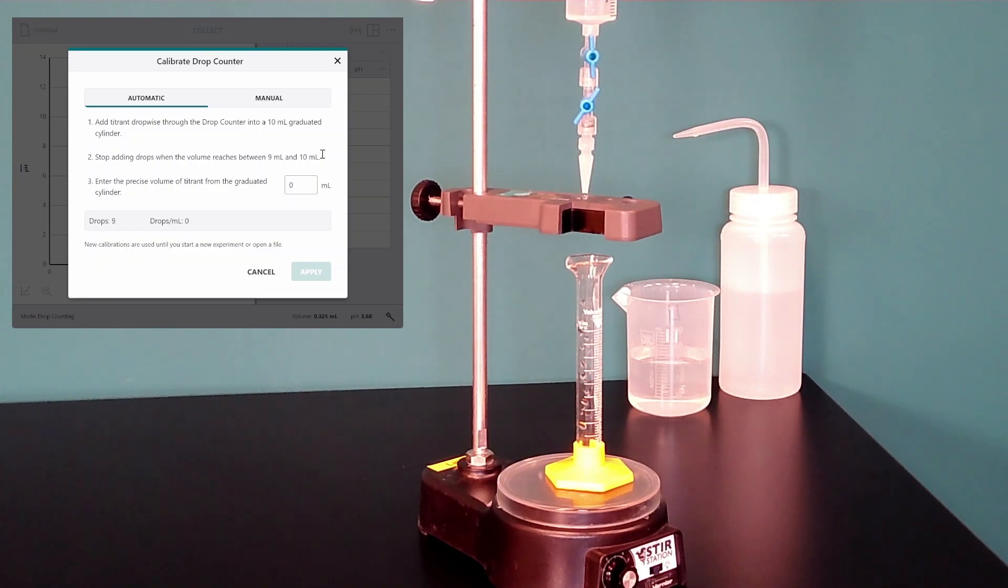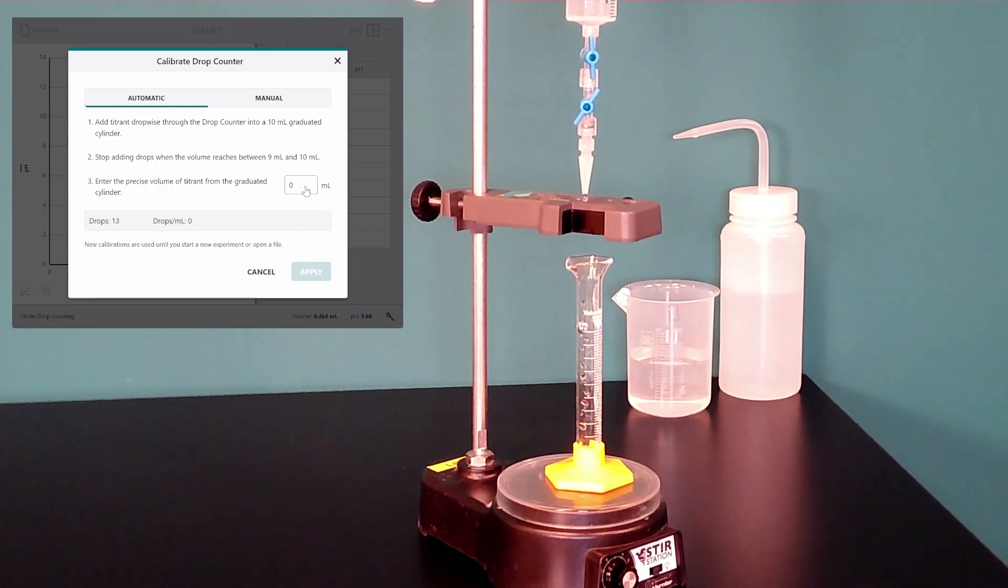And I'm going to continue with this process until the volume in the graduated cylinder is between 9 and 10 milliliters. And then I will put that final volume that I read in the box here.